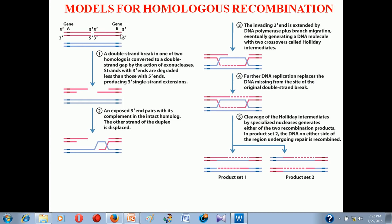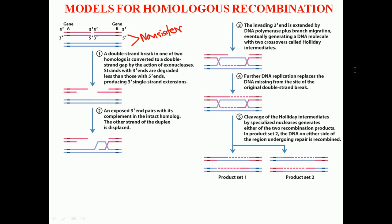In homologous recombination, among the aligned non-sister chromatids, one of them has a double-stranded break — this is the initiation of homologous recombination. The other strand remains intact. After the double-stranded break, the ends are initially blunt, but for the process to work properly we need a 3' overhang at both ends. After generation of the 3' overhang, one of the overhangs inserts itself into the intact DNA strand, finding a complementary base pairing. This is called strand invasion.